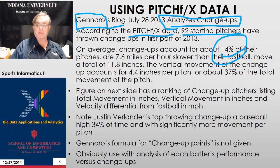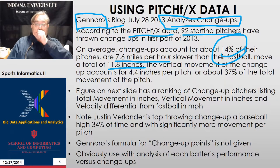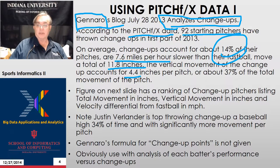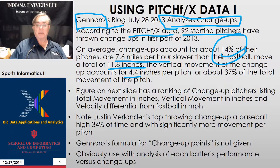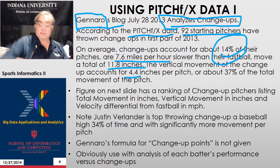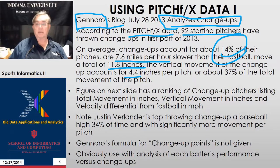Change-ups are meant to be 40% of all pitches. They're slower by 7.6 miles per hour than the average fastball, and they move a total of almost 12 inches — about 4.4 inches vertically, which is about a third of the total, and the rest horizontal. On the next slide, we have a whole bunch of pitchers and a measure listing of what their change-ups do.